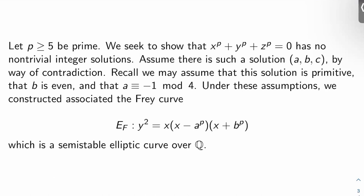What do we want to show to finish the proof of Fermat's last theorem? We want to show that the equation x^P + y^P + z^P = 0 has no non-trivial integer solutions, meaning no solutions over the integers such that all the entries are non-zero. So what we'll do is we'll assume there is such a solution (a, b, c) by way of contradiction.